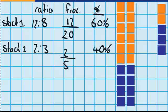Just like last time, I'm going to see what happens when I join these two groups together. In stack one sixty percent were orange, and in stack two forty percent were orange. What percentage do you think will be orange when we join these two amounts together? Will we be going somewhere right in the middle, or will it matter that this is a much bigger group than this small group?